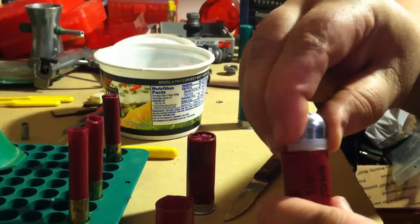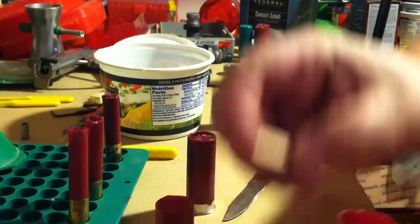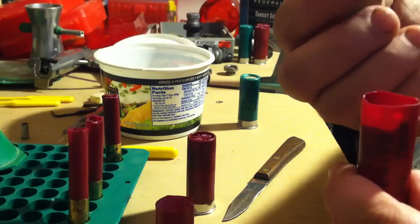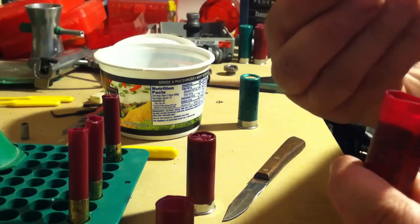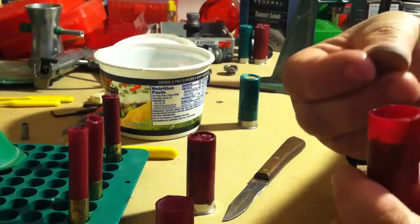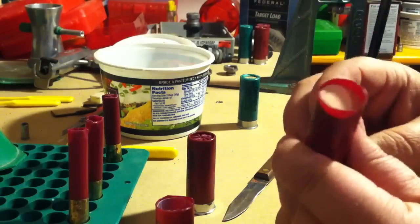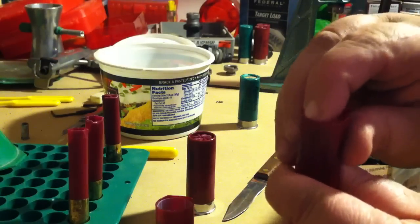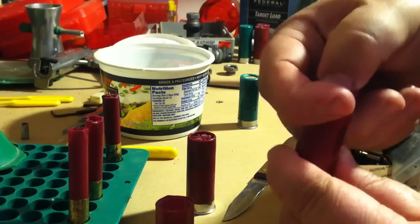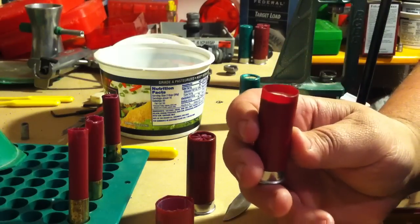Then I've got these 12 gauge nitro cards - they're like an overshot wad, over powder wad, or spacer depending on what you use them for. I got them just to use as an overshot card. I set my slug in there into my wad base, and then I'm ready for my little jig.